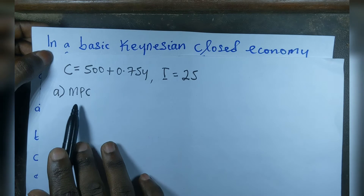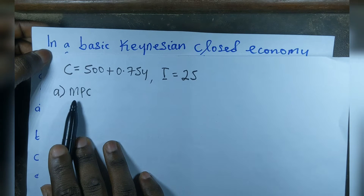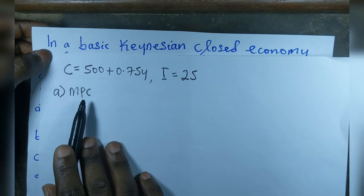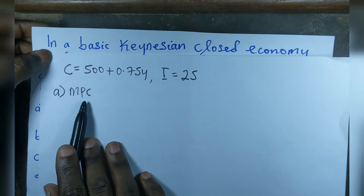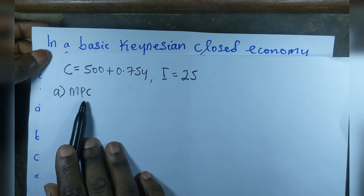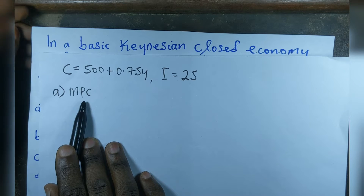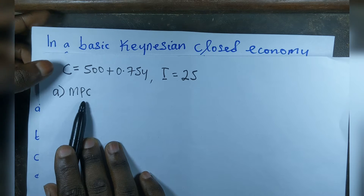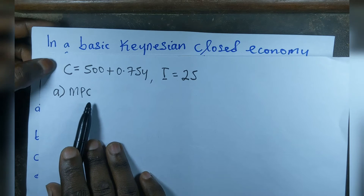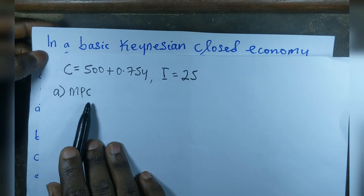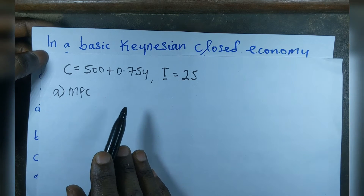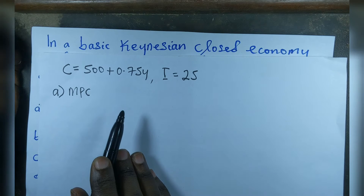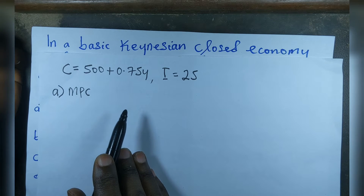MPC, known as marginal propensity to consume, is the ability of a consumer to change his consumption as a result of a change in income. To find it, we look at the slope of the consumption function. Let me define this variable so that you know how to get this marginal propensity to consume easily.